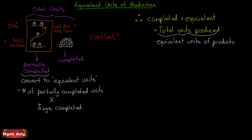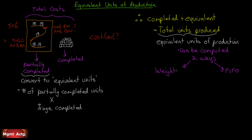Equivalent units of production — the total units produced — equal completed units plus equivalent units. The cost of these equivalent units can be computed two ways: using a first-in, first-out (FIFO) inventory system or a weighted average. Unlike job costing where we track every cost of a specific job, in process costing we make the same thing repeatedly and costs may be rising. We'll focus on weighted average first; FIFO is covered in the appendix.